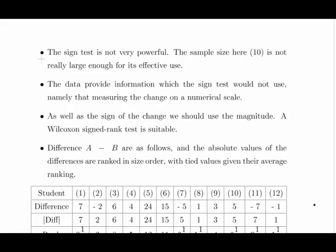So essentially what we did in part A was the sign test. And essentially it was based on categories. A or B, plus or minus, binomial categories. It is not very powerful. Particularly the sample size here. Now the sample size being referring to part A, which is 10, not 12 here in part B. It is not large enough for effective use, it's not large enough to make inferences around the general population. The data provides information, and this is part B now, information which the sign test would not use, namely measuring the change on a numeric scale.